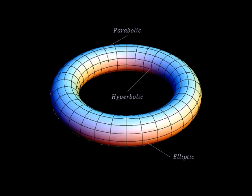There are some shapes that have more than one type of point, such as the torus or doughnut. Here we can see three types of point.